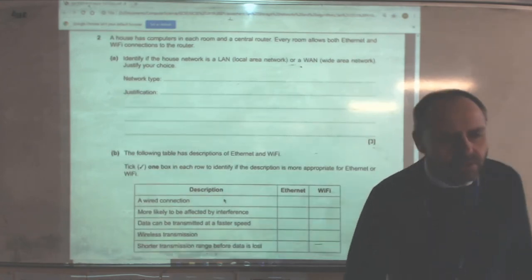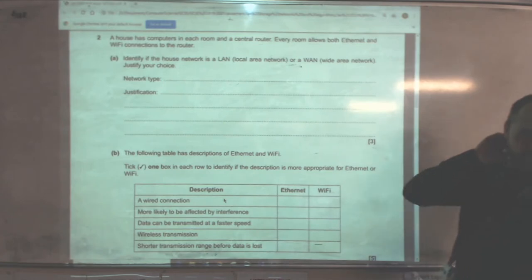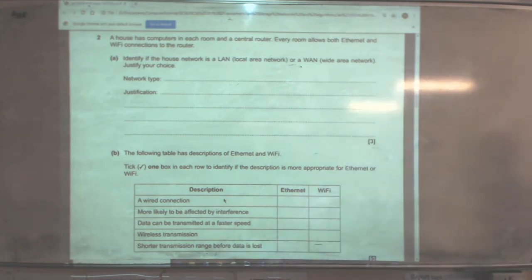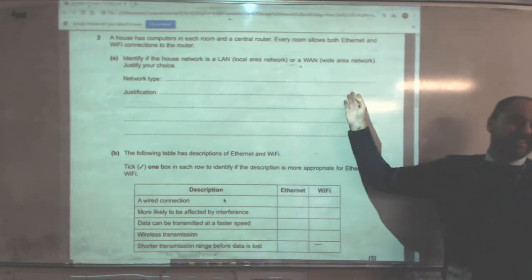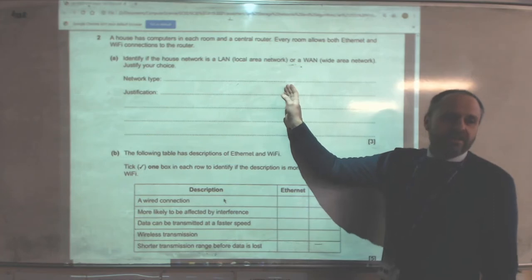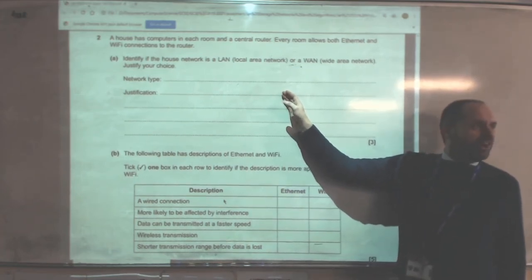Networks. Right. So we've got houses, computers in each room and a central router. Every room allows both Ethernet and Wi-Fi. So that is, remember, Ethernet is cables, wired networks. Wi-Fi, as its name suggests, is wireless. Identify if the house network is a local area or a wide area network. So it's obviously what? It's a LAN, isn't it? Close proximity. But the justification is, so you've got to explain what's different, basically, that's the justification, what is the difference? That they have got access to all the devices, okay, that they're connected to their own equipment. Generally, when you've got a LAN, you're managing your own equipment.